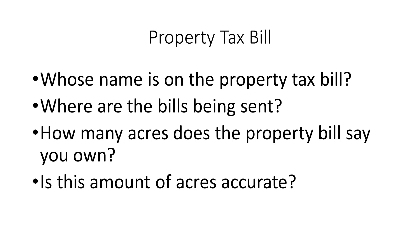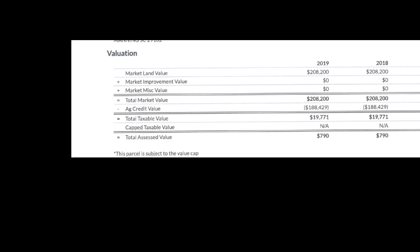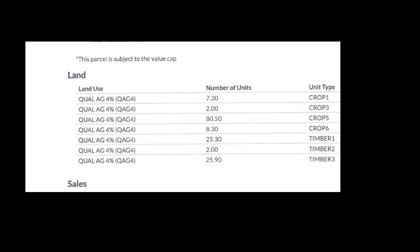How many acres does the tax bill say that you own? Is this the amount of acres you think you own — is it more, or is it less? Now take a look at what your property tax value is; it should be clearly stated on your tax statement. Also compare how many acres are in agriculture, timber, or land that doesn't produce revenue. Do these figures make sense? Find them on your tax statement.